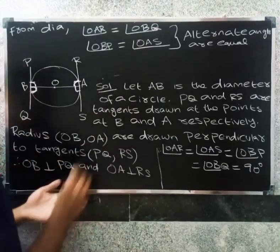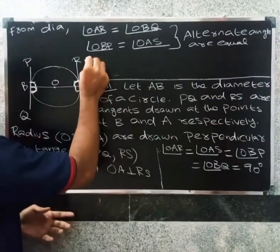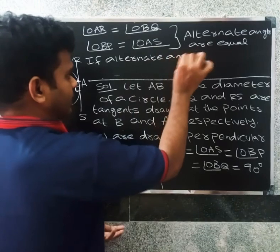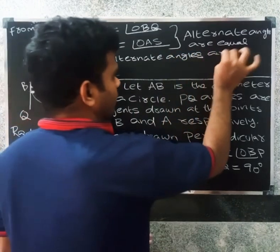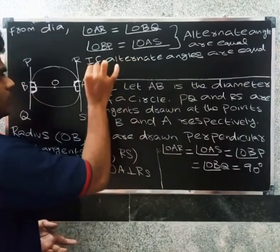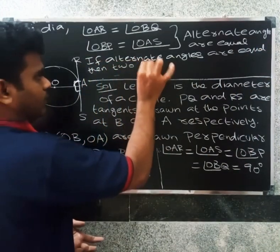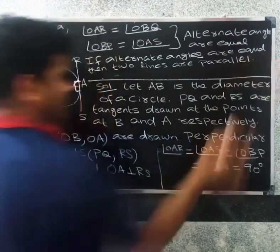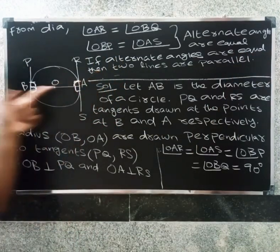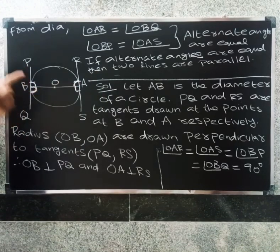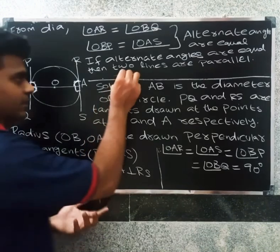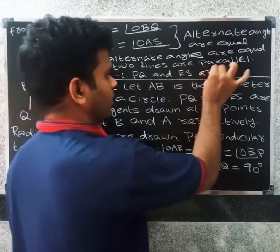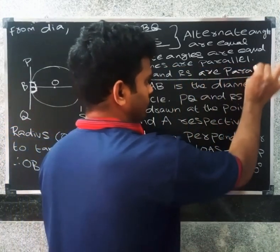So, if alternate angles are equal, then two lines are parallel. Since alternate angles are equal, therefore PQ and RS are parallel. This completes the proof.